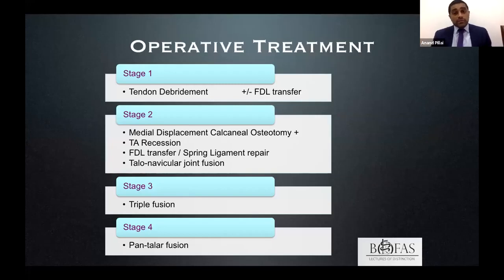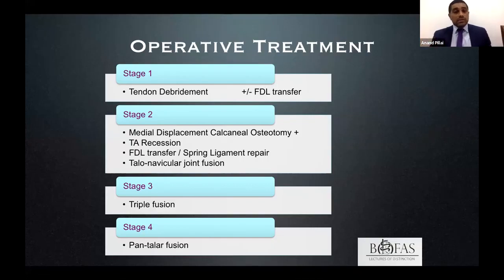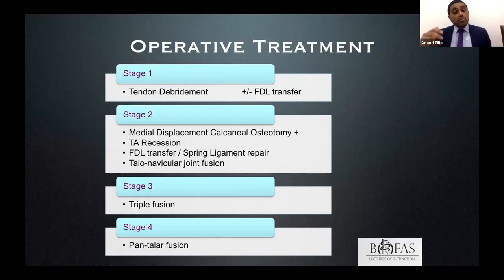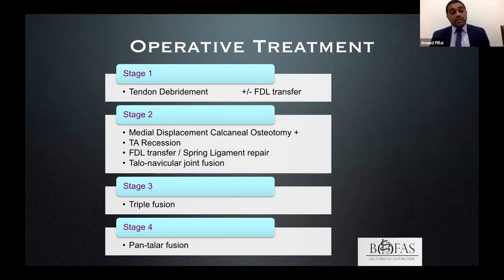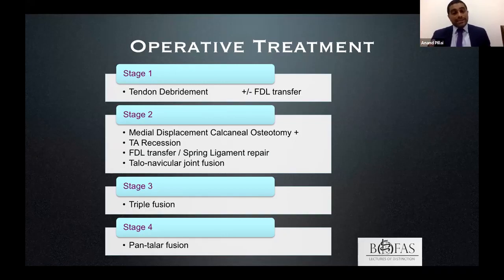The Johnson-Strom classification guides surgical decision-making. In stage one, simple tendon debridement — occasionally combined with tendon transfer if the tendon is weak. In stage two, the mainstay includes medial calcaneal osteotomy, gastrocnemius recession, FDL transfer, and spring ligament repair with or without talonavicular correction if necessary. As deformity becomes fixed in stage three, a triple fusion is required. In stage four, the fusion extends to the ankle — a pantalar fusion.